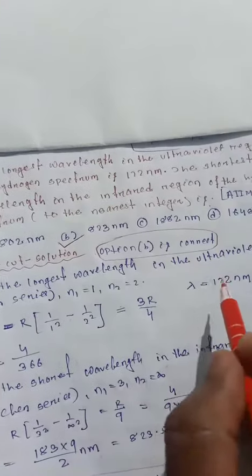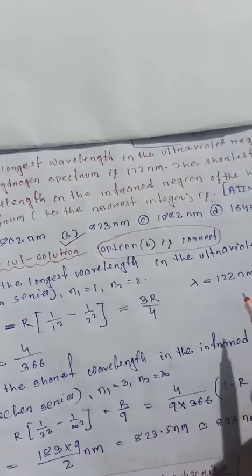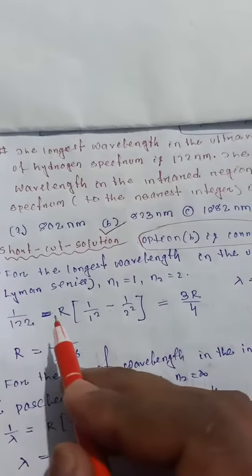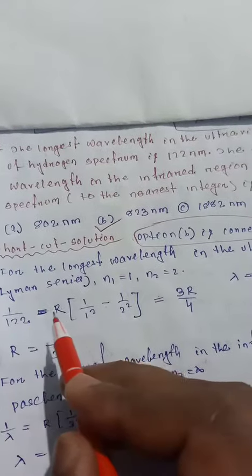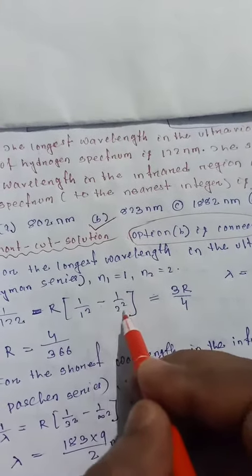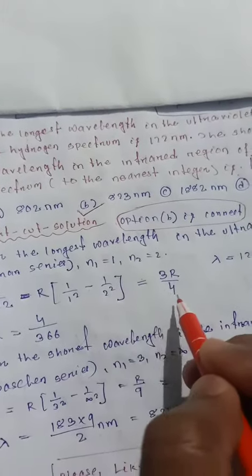The lambda is given as 122 nanometers for the longest wavelength. So 1 over 122 equals R, the Rydberg constant, times 1 squared minus 1 over 2 squared. So we get 3R by 4.